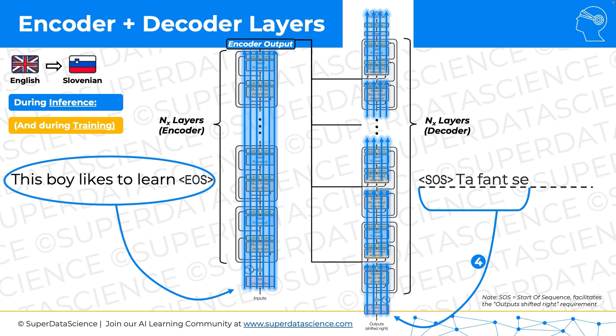After the final decoder layer, going through the linear transformation and softmax, we get probabilities — there'll be around 200,000 probabilities, or however many tokens are in the Slovene language. Each of the vectors generates that many probabilities, but as discussed previously we're only interested in the probabilities coming from the last word, and based on that probability distribution we take the word with the highest probability to generate the next word.